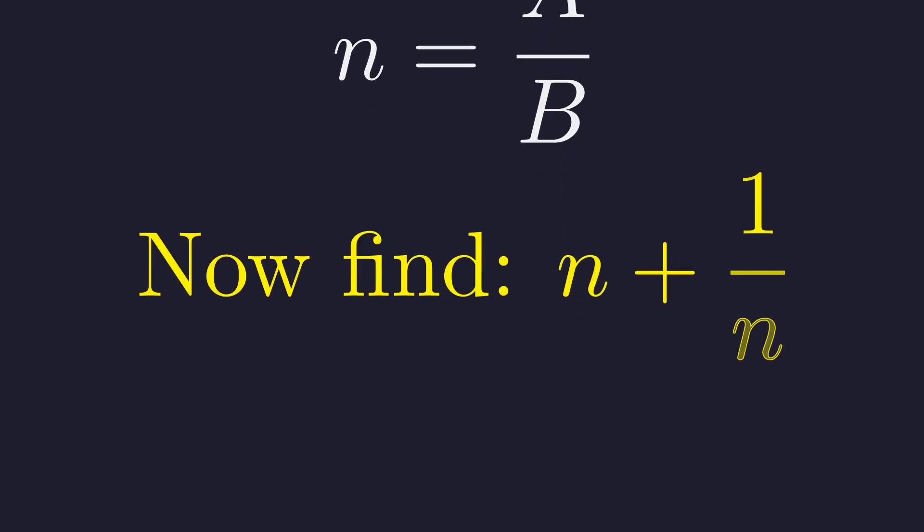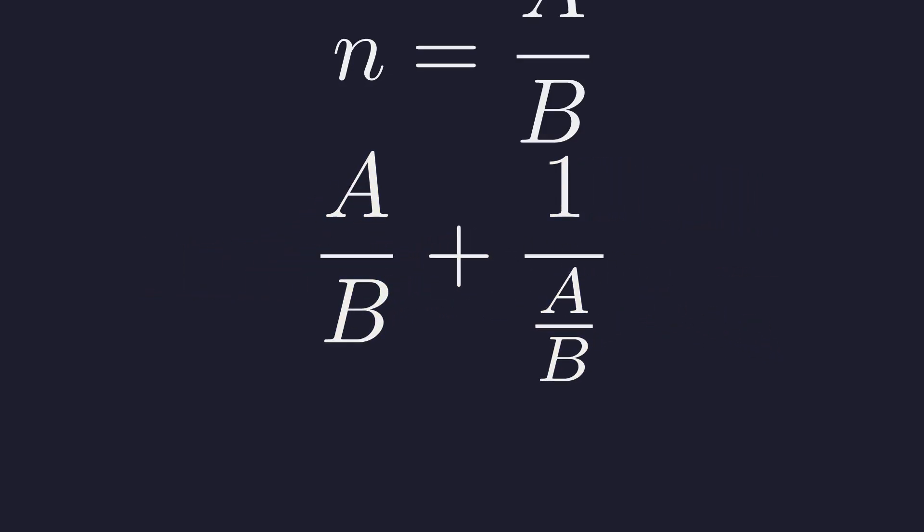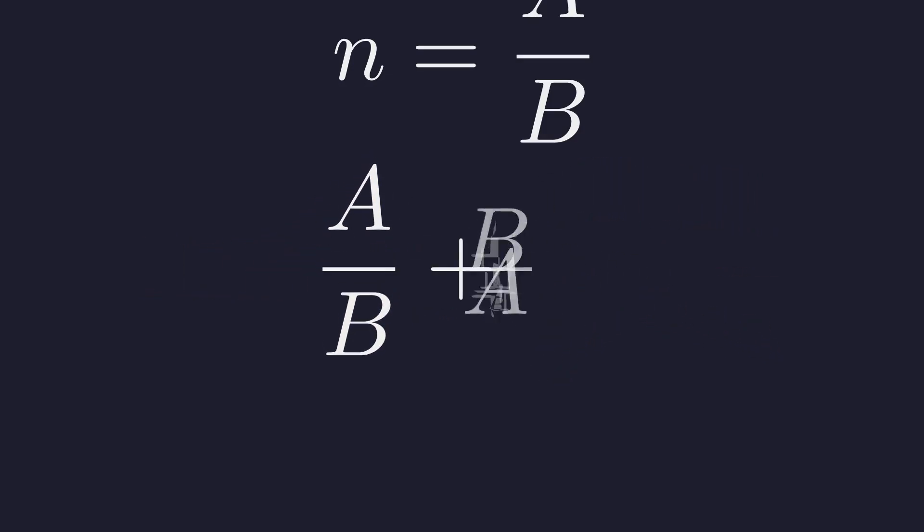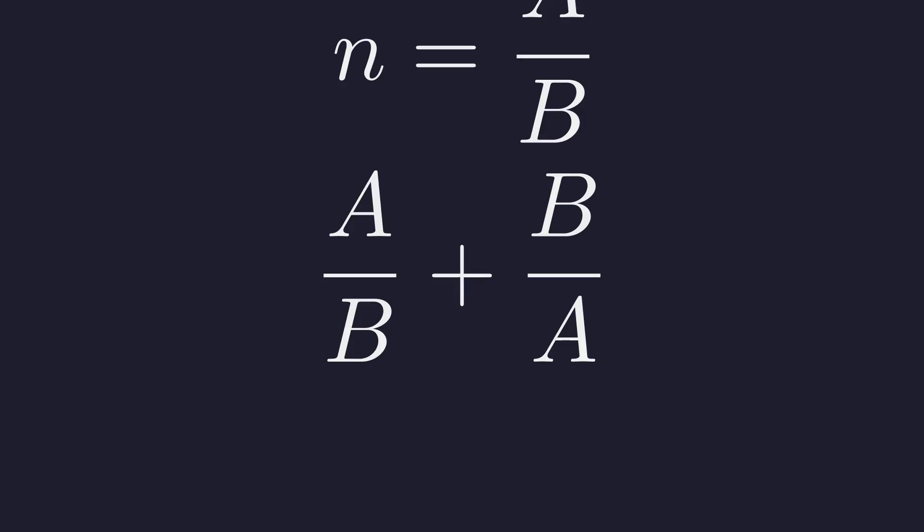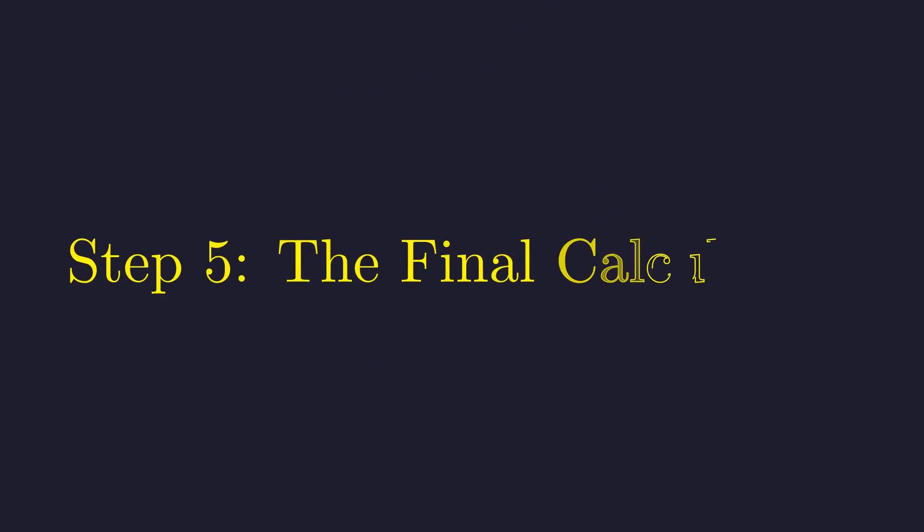Now we can rewrite what we're looking for. Substituting A over B for n. The reciprocal of A over B is B over A. So we get this. The problem now reduces to evaluating this expression using what we know about A and B.